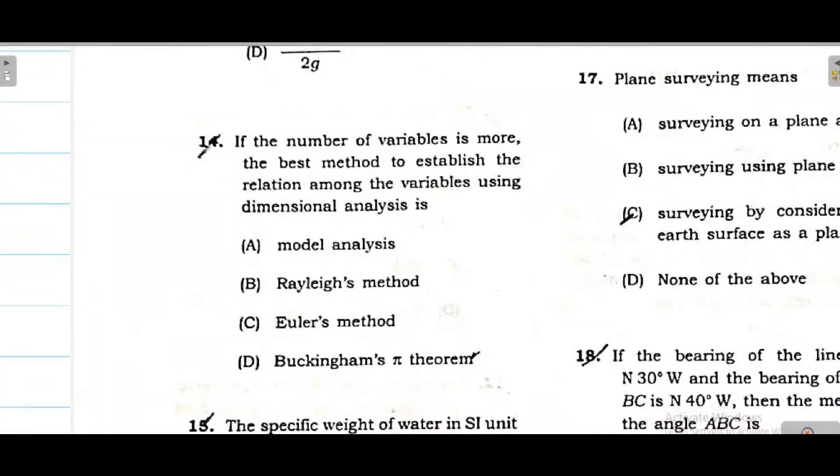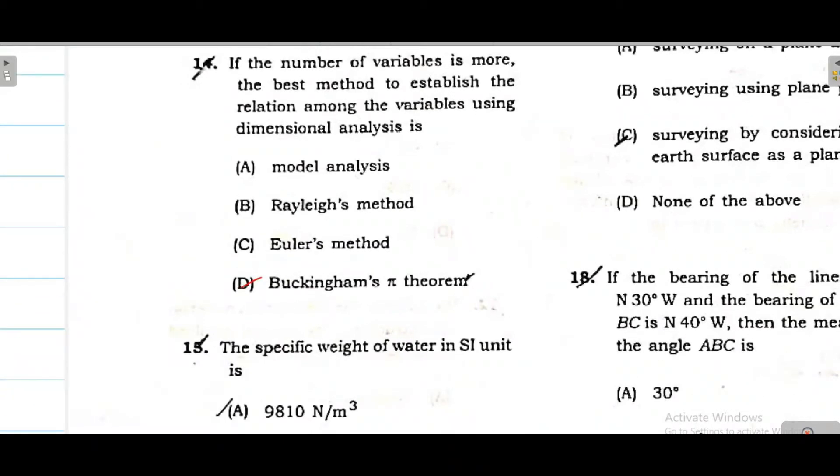Question number 14. If the number of variables is more than the base method to establish the relationship among the variable using dimensional analysis, the correct answer will be Buckingham Pi theorem. Buckingham Pi theorem is used when there are many variables. So option D is correct. This question is from fluid mechanics, dimensional analysis chapter.